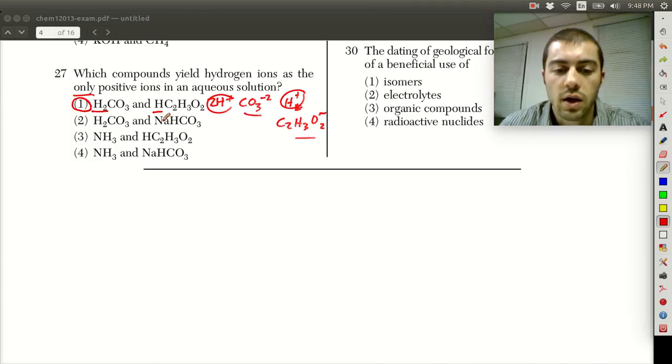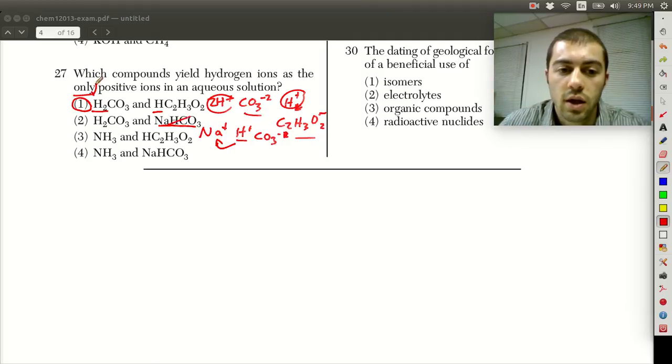Looking at the rest of the answer choices, NaHCO3, this would form Na+. So this would be a positive ion, so even if this broke up into Na+ and H+ and CO3 2-, H+ is not the only positive ion here because we also have sodium as a positive ion. So this doesn't fit the only positive ion description.